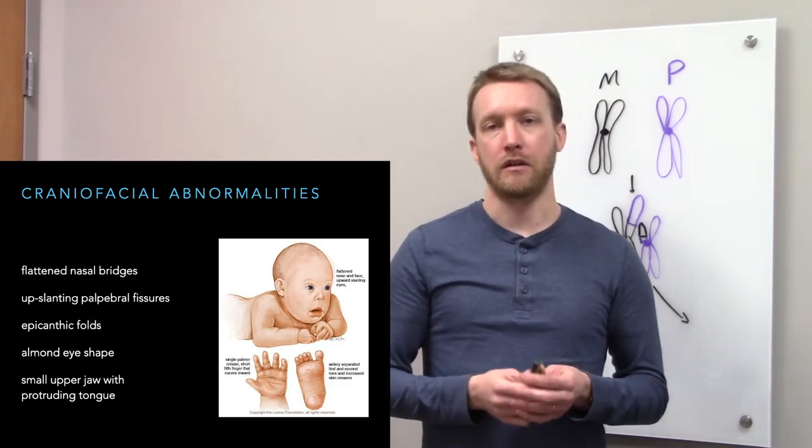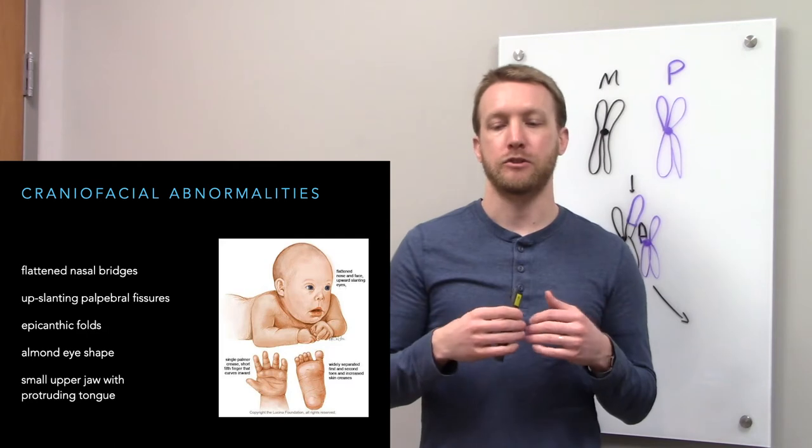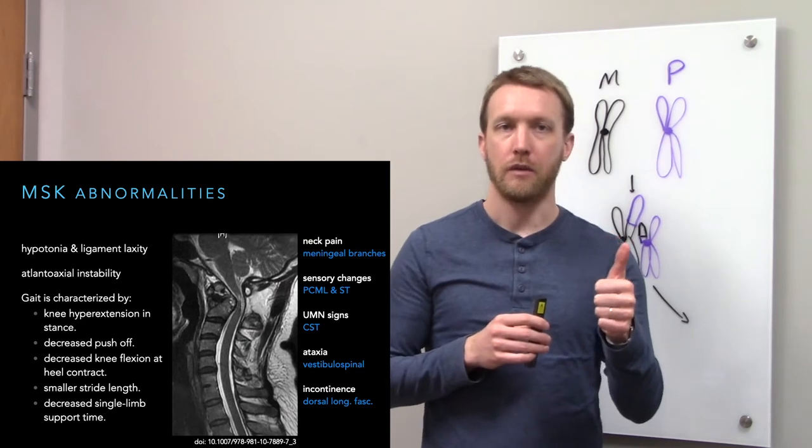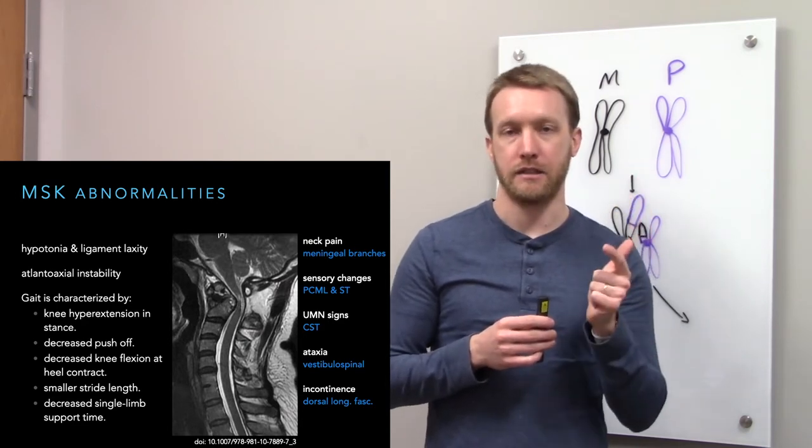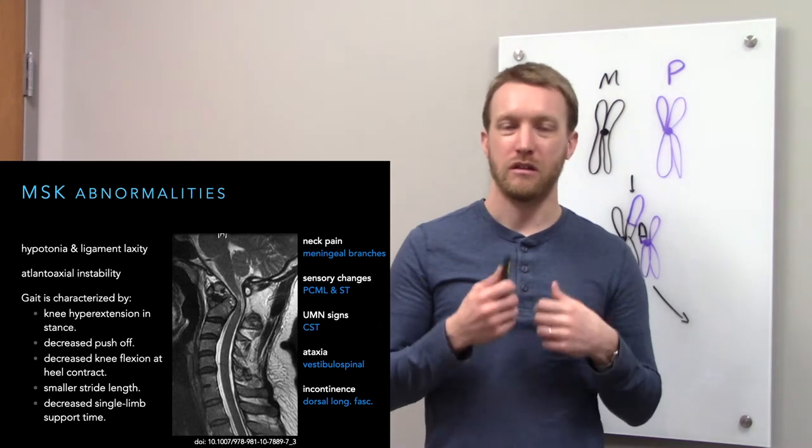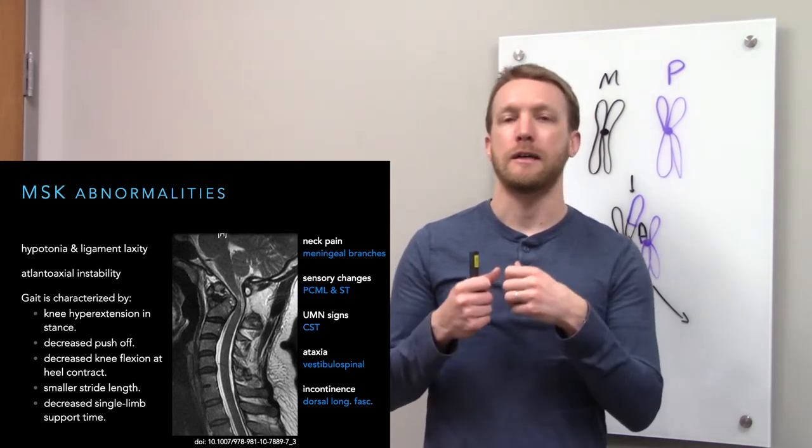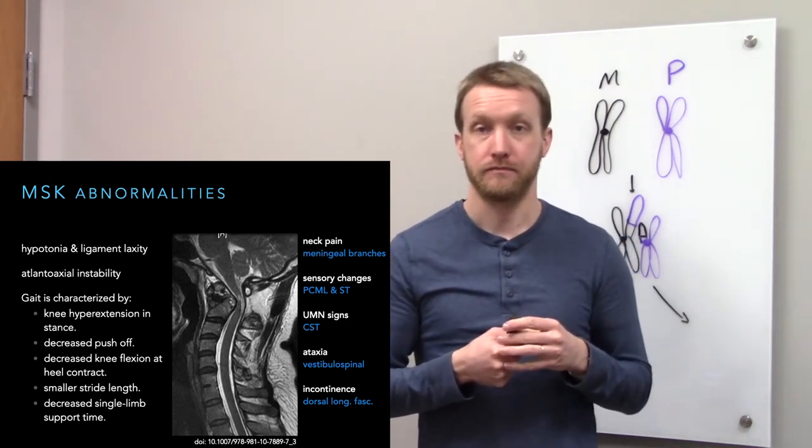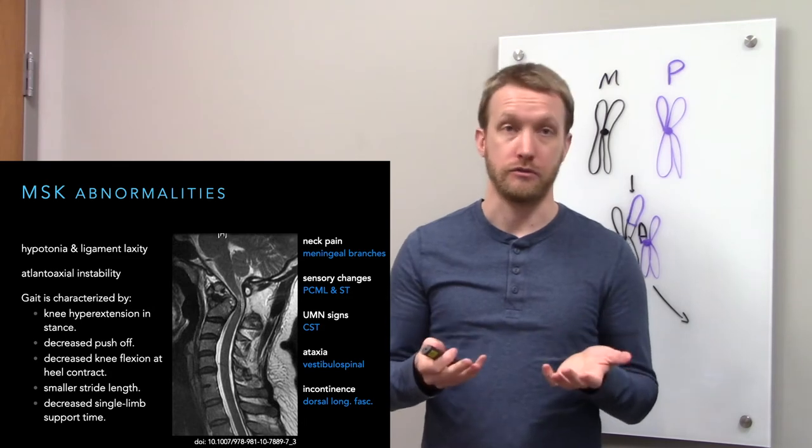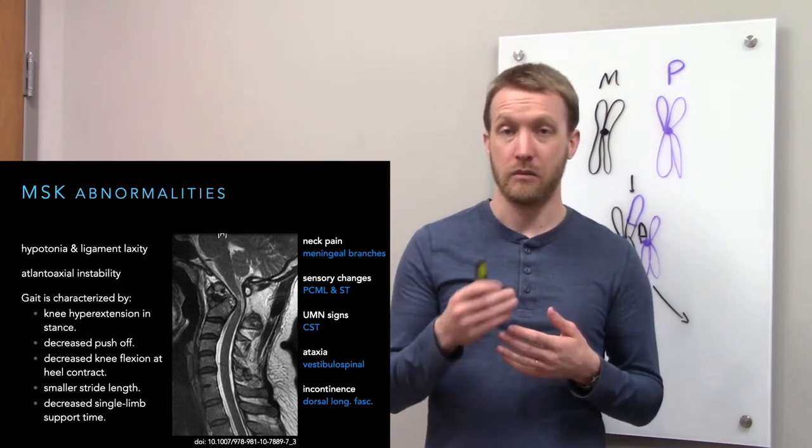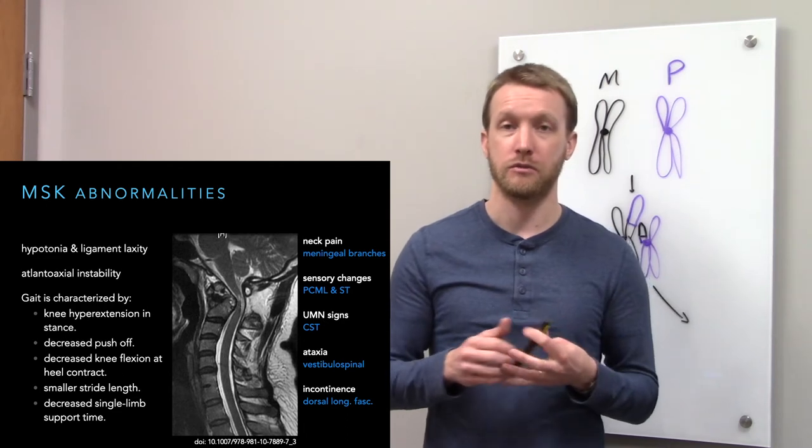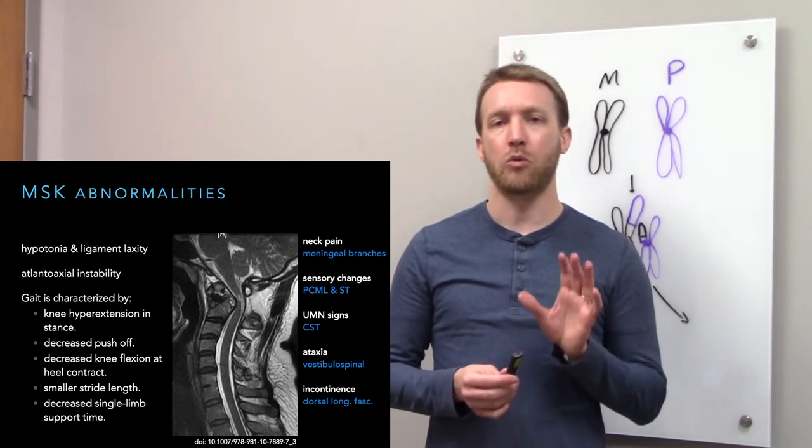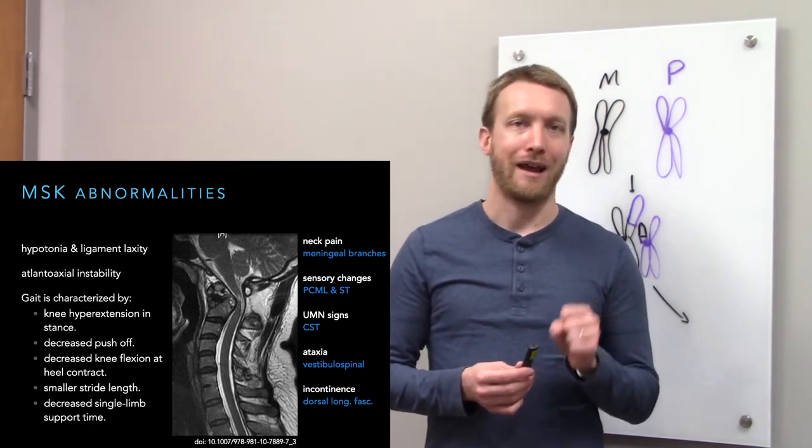The musculoskeletal abnormalities can be summarized as just sort of loosey-goosey. We see hypotonia and we see ligament laxity. So kind of weak, flaccid muscles and poorly elastic ligaments. And this creates a variety of issues. For example, there's a couple of hip problems. We'll see some hip instability and really instability of multiple joints.